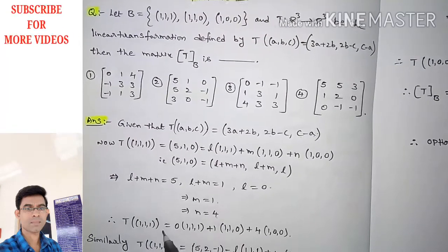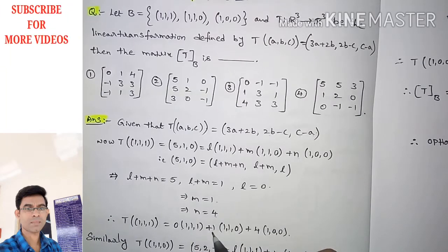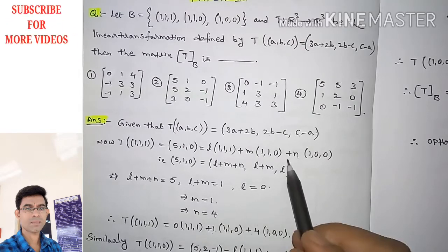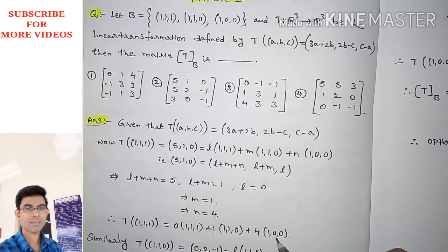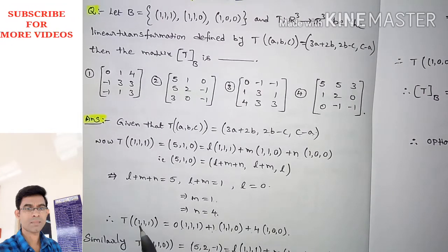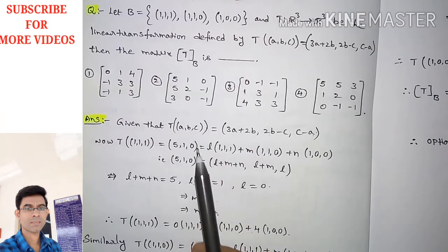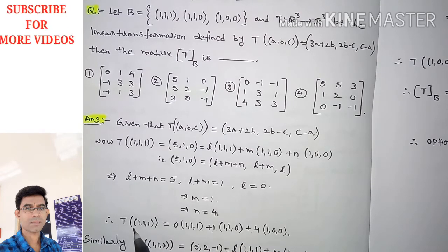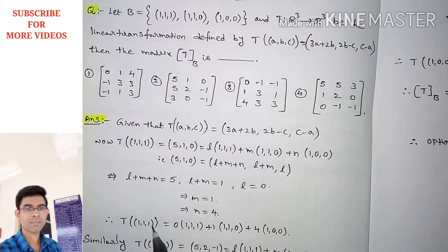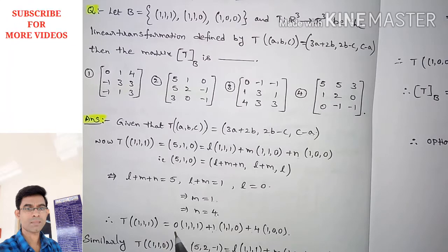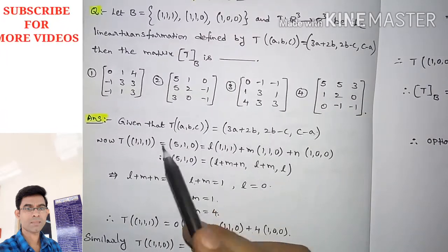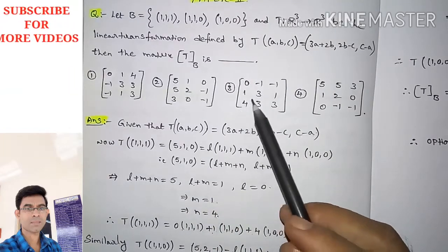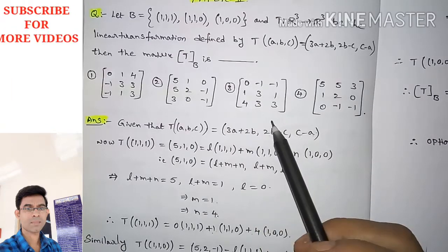Therefore T(1,1,1) = 0·(1,1,1) + 1·(1,1,0) + 4·(1,0,0). The coordinates of T(1,1,1) with respect to basis B are (0,1,4). These form the first column of the matrix representation. Looking at the options, option number 3 has first column 0,1,4 — so option 3 will be correct. We will verify the remaining columns as well.